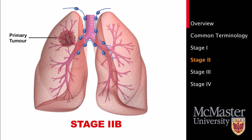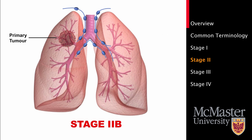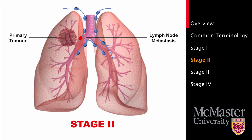The second subtype is 2b. This is where the tumor is more than 7 cm wide and has not yet spread to any lymph nodes, or the tumor is 5–7 cm wide but has spread to lymph nodes on the same side of the chest, or the tumor is beginning to invade other structures in the chest, or there is more than one tumor in the same lobe of the lung. Stage 2 cancers are often treated with surgery and/or chemotherapy.